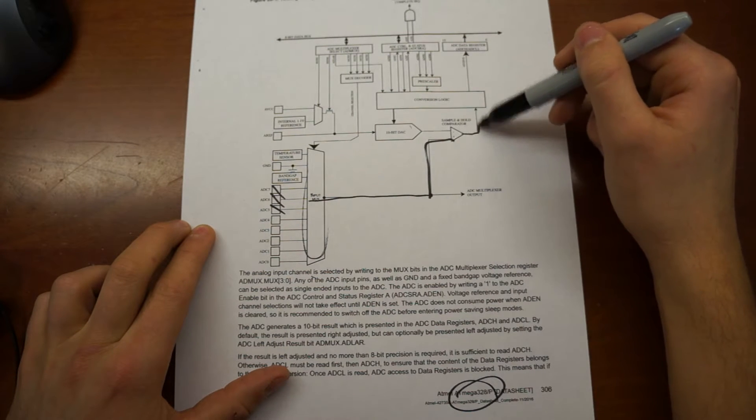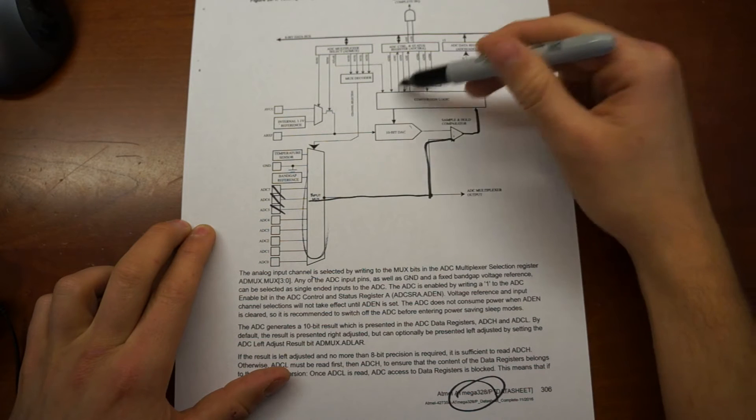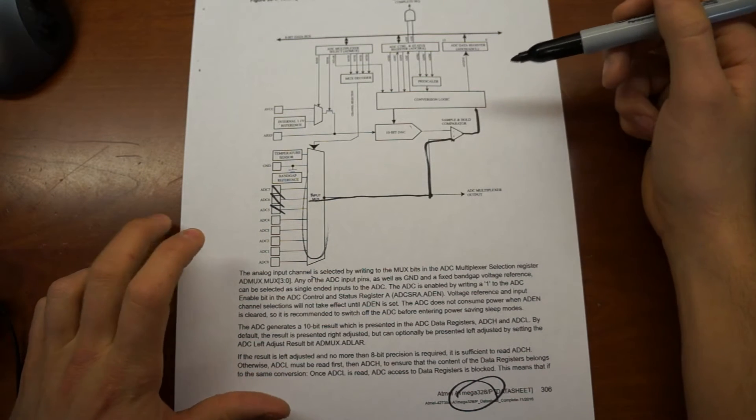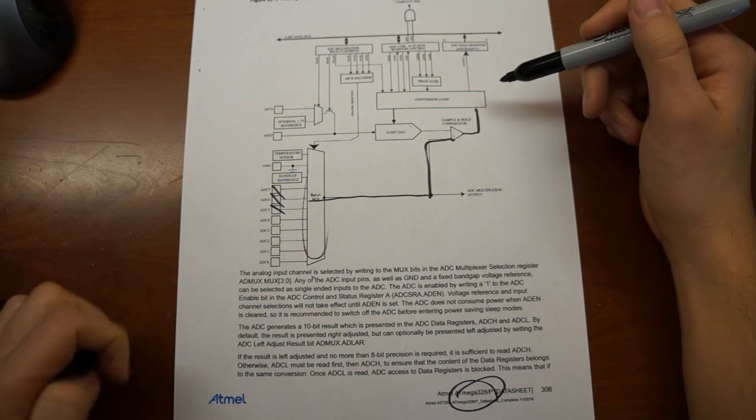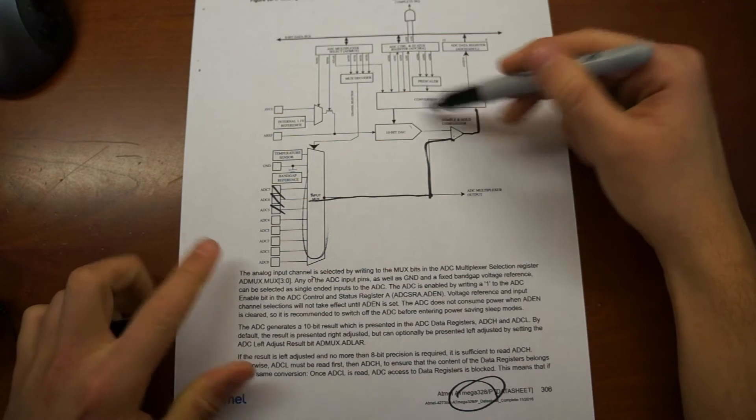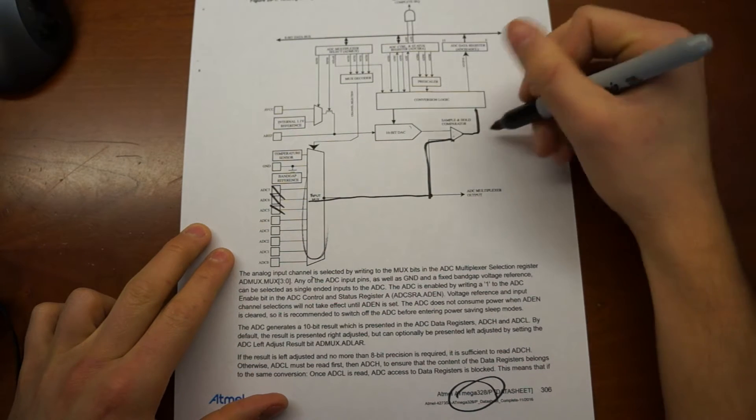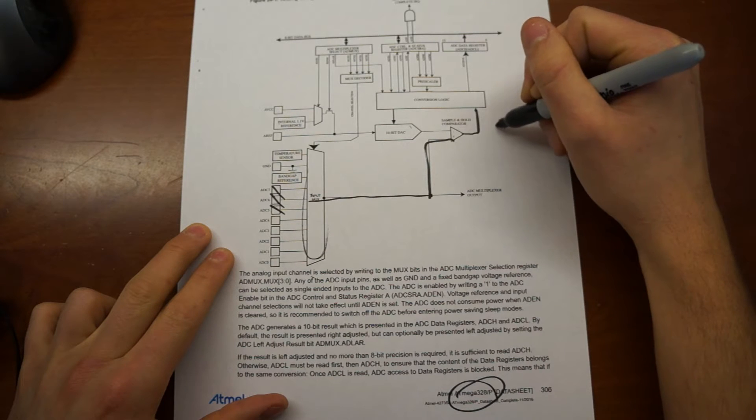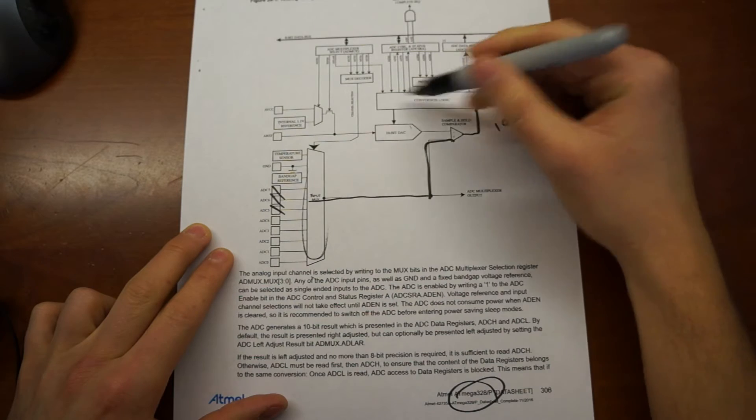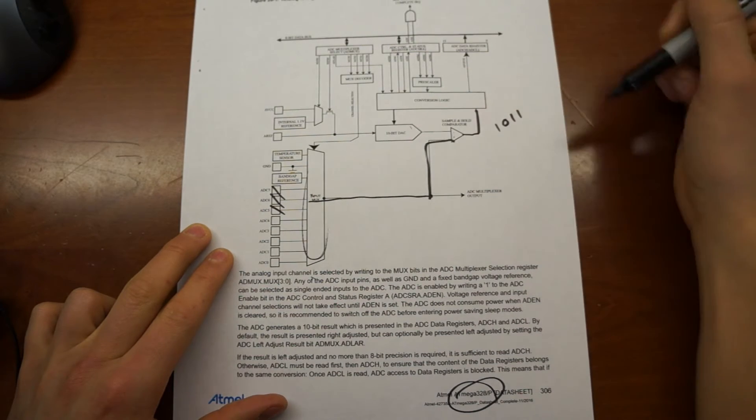And the output of that comparator is fed into this block conversion logic. Yeah, not sure what all is going on here. But this is essentially the thing that's holding on to those ones and zeros, to those bits that we're recording as we iterate through the successive approximation method.